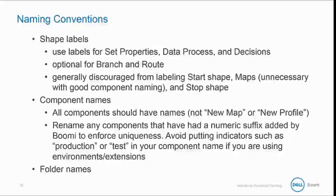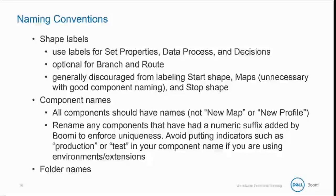Make sure that shapes are labeled appropriately. Use labels for set properties, data process shapes, and decision shapes. You may also want to use labels for branch shapes and root shapes. Generally, we discourage using labels on the start shape and maps, which is unnecessary with good component naming, and the stop shape.